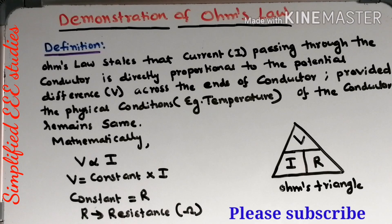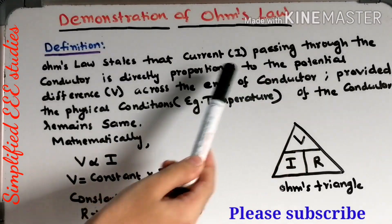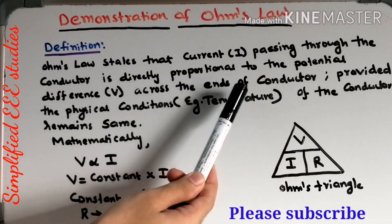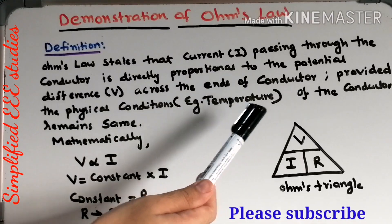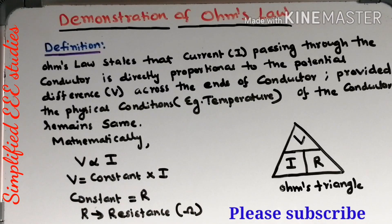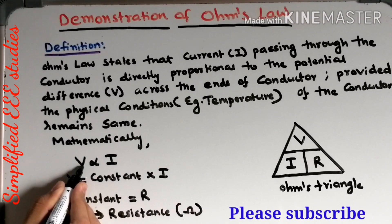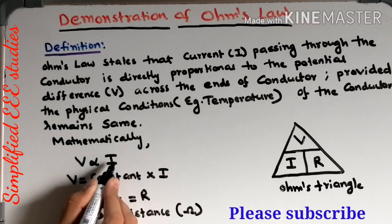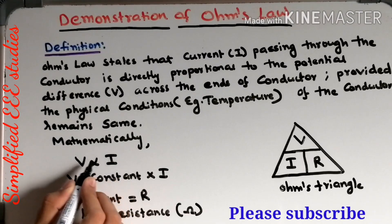Let us study the theory behind Ohm's law. Ohm's law says that current passing through the conductor is directly proportional to the potential difference across the ends of the conductor, provided the physical conditions such as temperature of the conductor remain the same. That means if mathematically we write, the potential difference between two ends of the conductor is directly proportional to the current flowing through the conductor — voltage and current are both directly proportional.